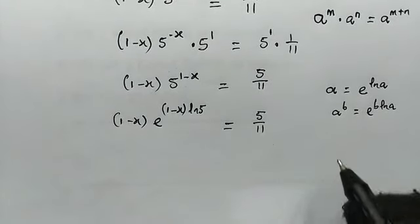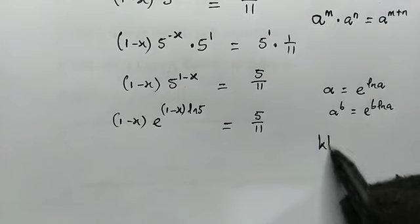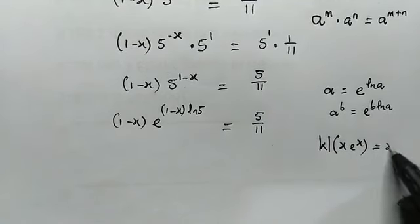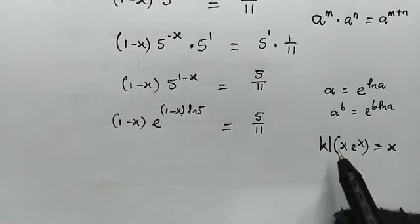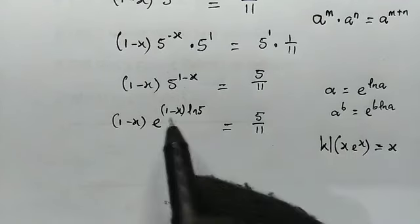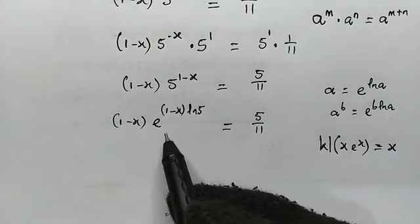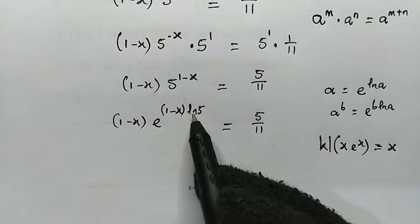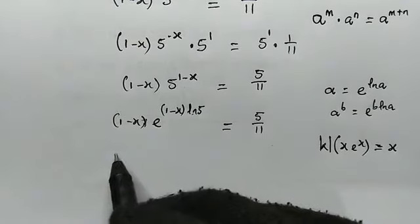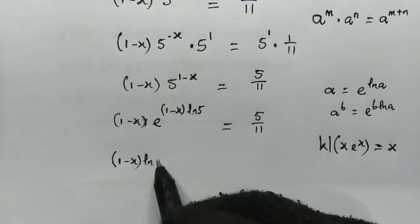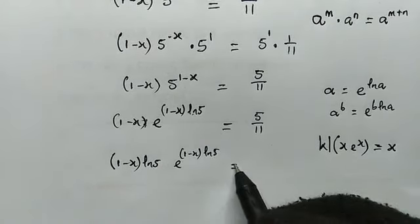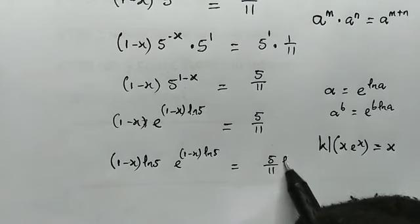Now, are we going to make use of the Lambert W function? Let's see. Remember, the Lambert W function has the following argument: x times e to the power of x simplifies to exactly x. Looking at this expression, the power of e and the coefficient are not yet equal — the only difference is we have ln 5 as a factor in the exponent but not in the coefficient. So the idea is to multiply both sides by ln 5. So we get 1 minus x times ln 5, times e to the power of 1 minus x times ln 5, equal to 5 over 11 times ln 5.